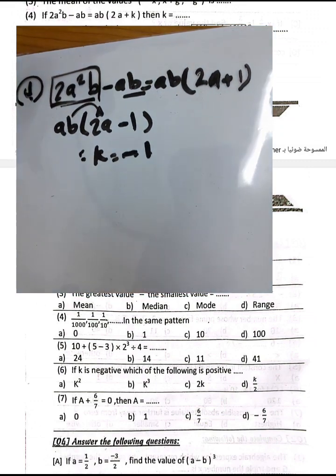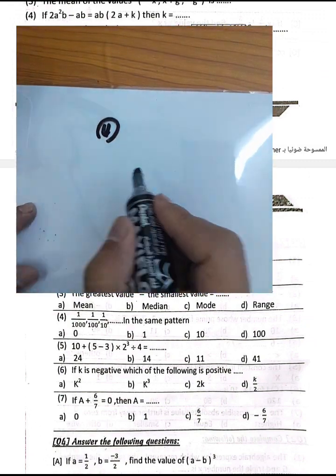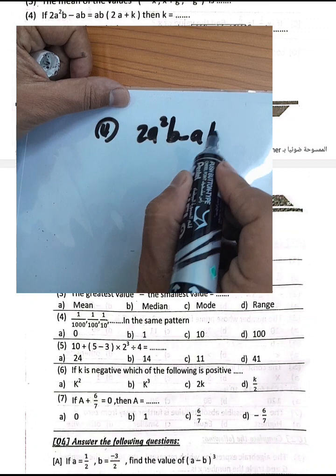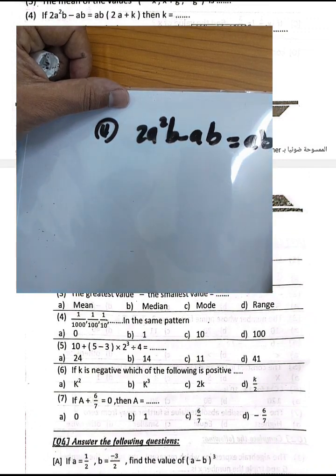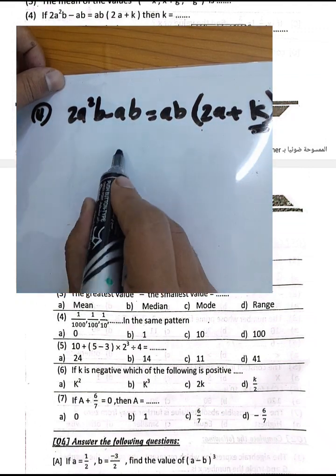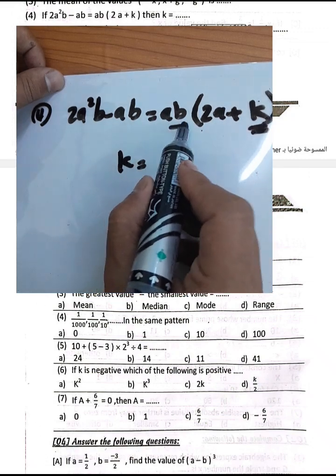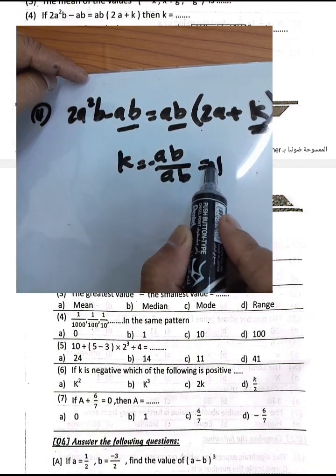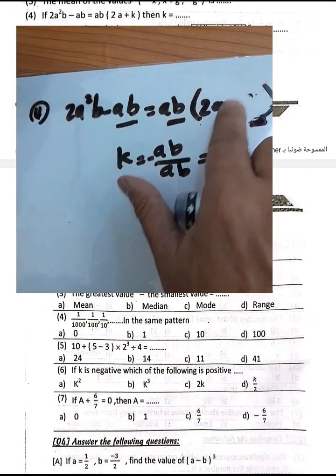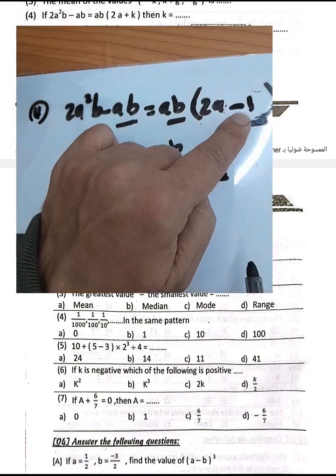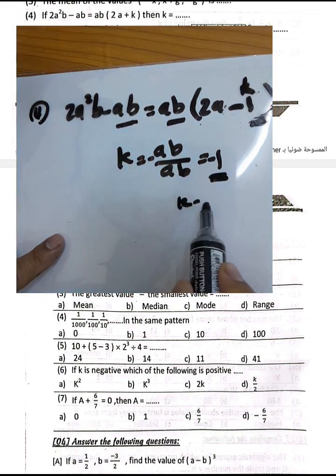Let me show this example again. Question number 4: if we have 2e²p minus ep, the result equals ep times (2e plus k). ep divided by ep equals 1, and since the sign is negative, k must be negative 1. Because ep times negative 1 equals negative ep. Therefore k equals negative 1.